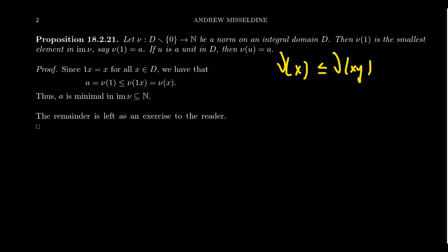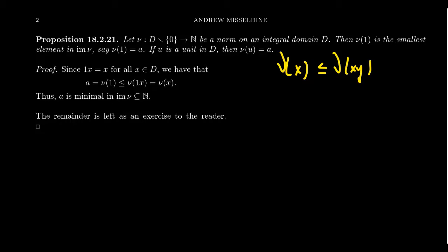Why is the norm of the unit the smallest possible? The thing about unity is that 1 times x always equals x. So the norm of 1 is less than or equal to the norm of 1 times x, which equals the norm of x — showing the minimality. That was pretty simple. I'll leave it as an exercise to prove that any unit also obtains this minimum norm — it's basically just as easy. So a norm can be a very useful tool to find and identify units inside of an integral domain.